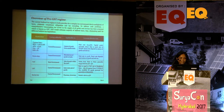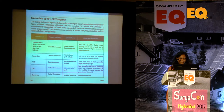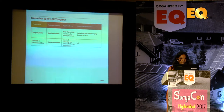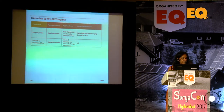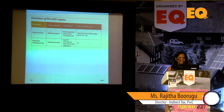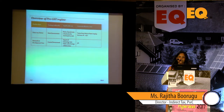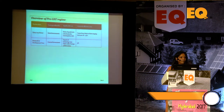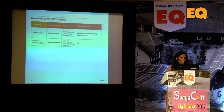Service tax was effectively 14.5% plus an additional CESS of 0.5%. Entry tax ranged from 1–14% depending on the state and product, and R&D CESS was 5%. All these taxes have now been subsumed into GST — Goods and Service Tax.